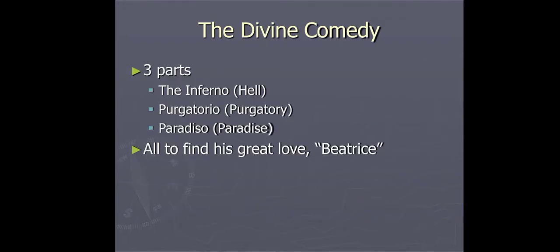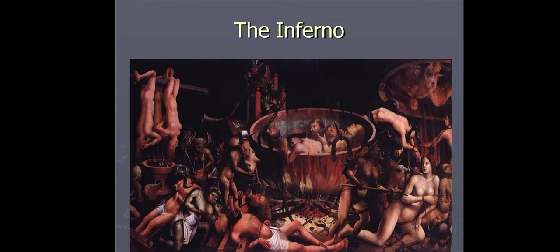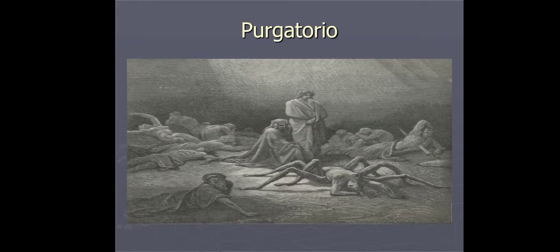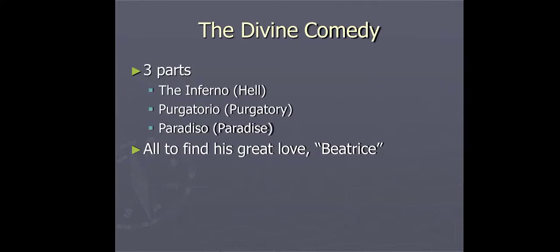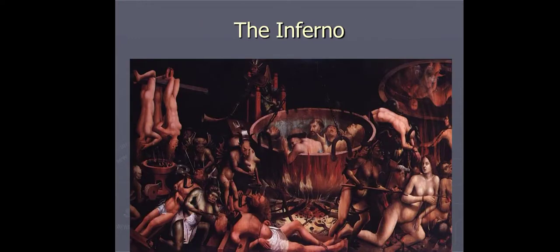Now we are going to discuss the book The Divine Comedy. It basically has three parts: the Inferno (Hell), Purgatorio (Purgatory), and Paradiso (Paradise) — all to find his great love. The Divine Comedy means that everybody is in search of true love, the great love. So they started making paintings because they had a deep love for art. Look at the Inferno — they represented what hell looks like.